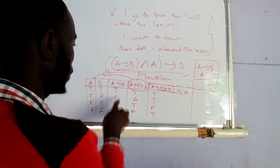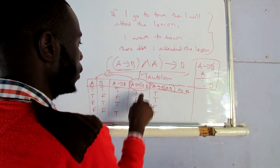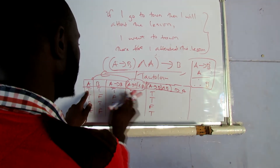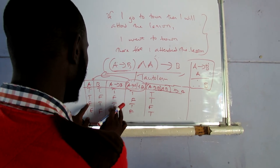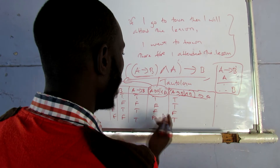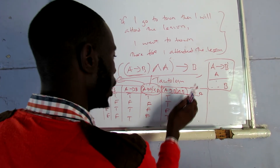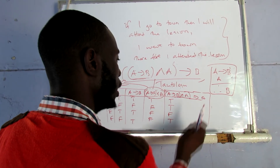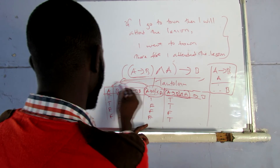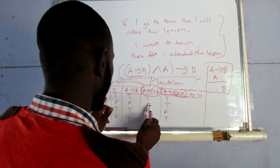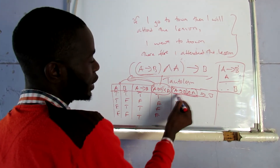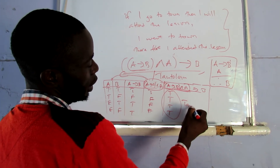Now I want A implies B conjunction with A, then implies B. Since I have this result, I want to say implies B. True implies true is true, false implies true is true, false implies false is true, false implies false is true. As you can see, this part gives us what we call a tautology.